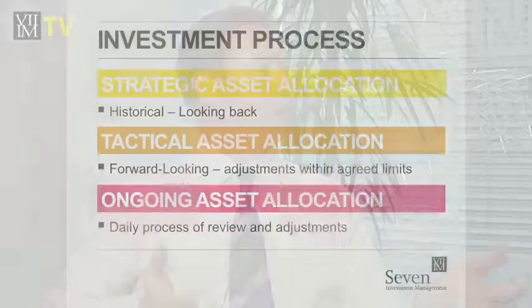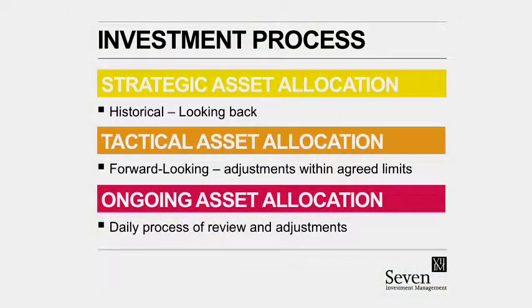We've always said that asset allocation is important, but how do we actually apply it and how does it operate? Tom, you've always gone on about the rigour and disciplines of asset allocation. How do we actually use it? We use it in several different ways, Justin. We have, if you want to use the terminology of the industry, strategic, which is a long-term view; tactical, which is a shorter-term view; and then we have daily flows. We need to manage it at three different levels. So how do we actually do that? What's the strategic? It sounds rather technical — what does that really mean?